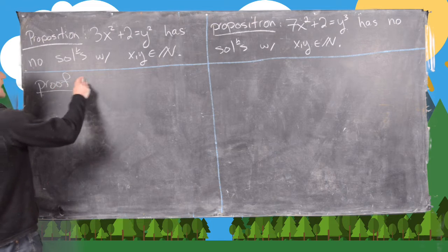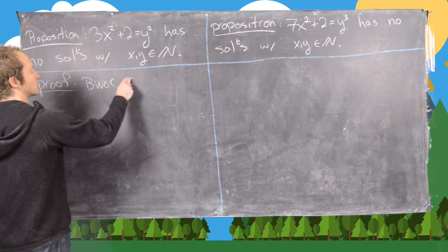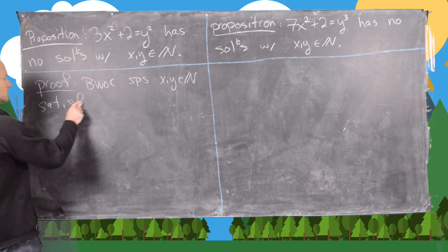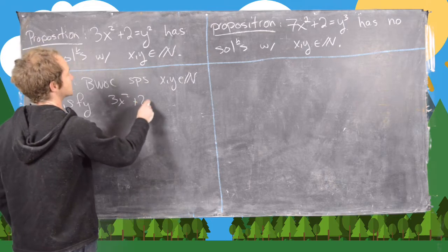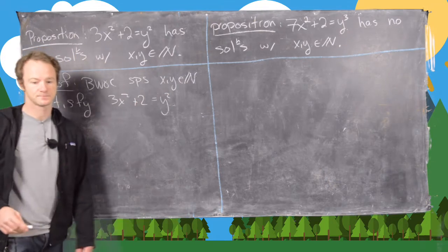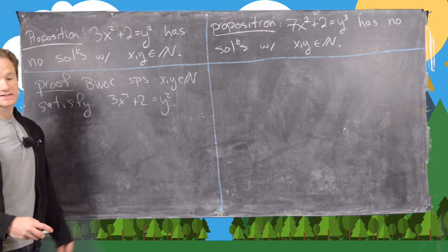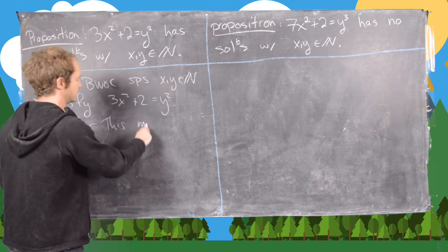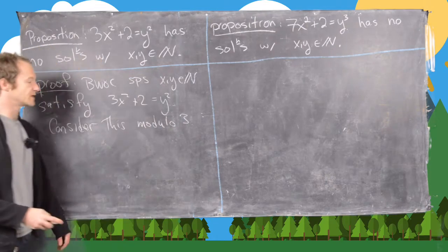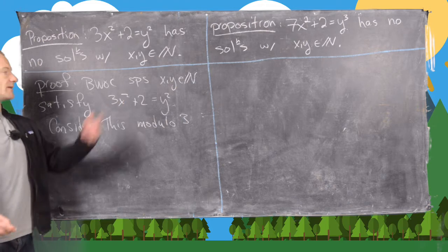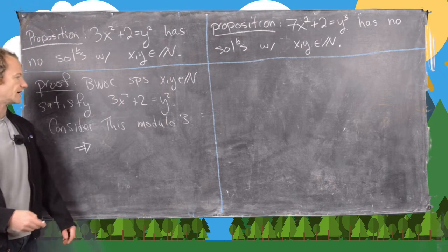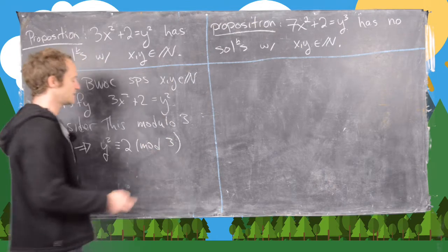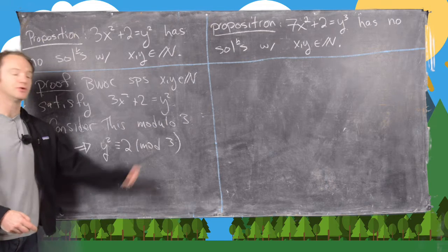So for the first one, by way of contradiction, suppose that x and y in the natural numbers satisfy 3x² + 2 = y². The next thing we're going to do is consider this equation mod 3. Notice that 3x² is congruent to 0 mod 3, so we get y² ≡ 2 (mod 3).